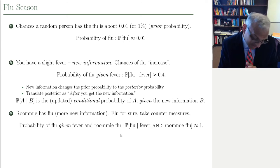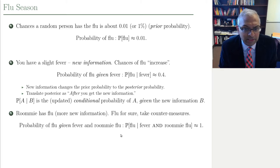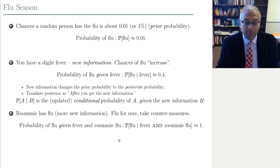Very peculiar things can happen when new information arrives. As Sherlock Holmes used to say, once you have eliminated the probable, whatever remains, however improbable, must be so. New information can take a probability that is very, very low — almost inconceivable — and make it the likely outcome.